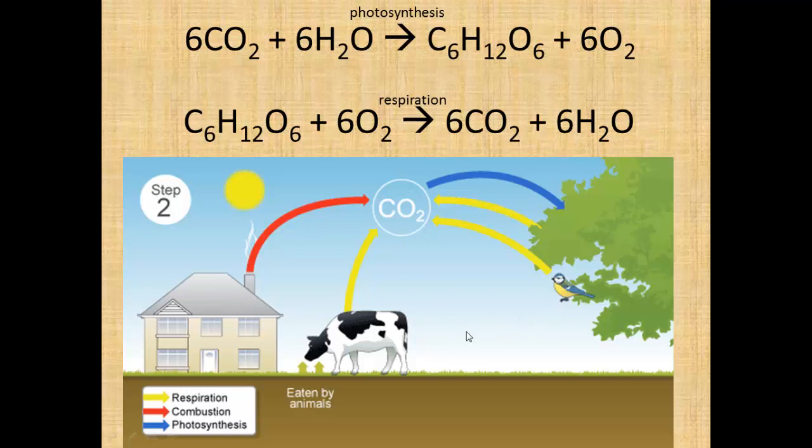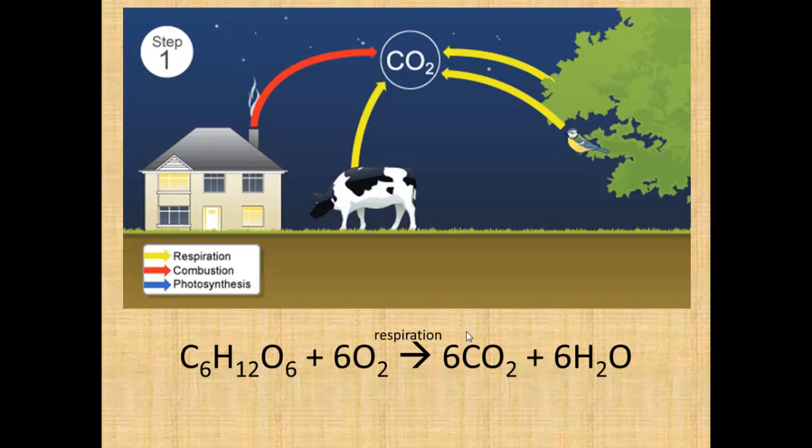This is during the daytime when photosynthesis is going on. At night time there is no photosynthesis — the energy from the sun is not available to the plant. So the plant and the animals are both doing respiration, therefore both releasing CO2, and carbon atoms are only going in one direction at night time: from living organisms via respiration into the atmosphere.